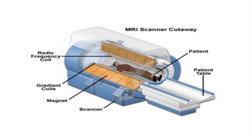MRI scans can distinguish between different types of tissue because of the way the hydrogen nuclei in different tissues respond to changing magnetic fields. Hydrogen nuclei behave as if they possess what is called spin. Since hydrogen nuclei are essentially protons — they only have one proton in the nucleus — they tend to have this magnetic property and tend to spin. Such nuclei have an odd number of protons.